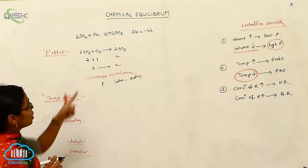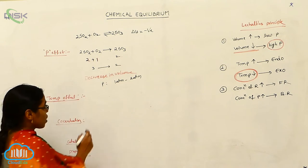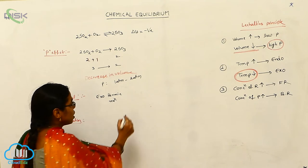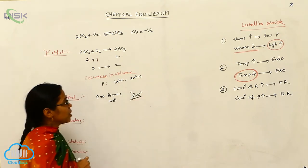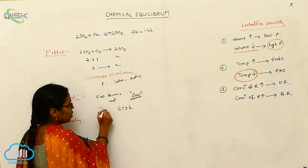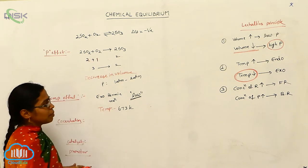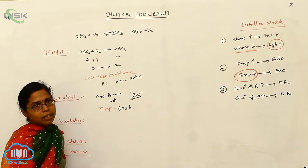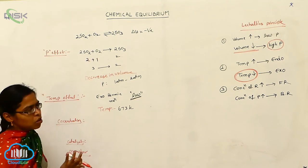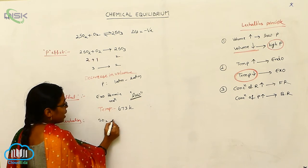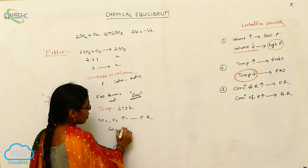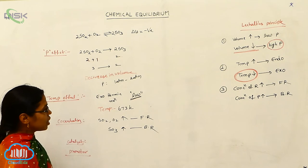For the temperature effect, since delta H is negative, this is an exothermic reaction, so theoretically low temperature is favorable. But at low temperature, the reaction speed is very slow. So we use the optimum temperature of 673 Kelvin. For concentration: whenever the concentration of sulfur dioxide and oxygen increases, the forward reaction takes place; whenever the concentration of sulfur trioxide increases, the backward reaction takes place.